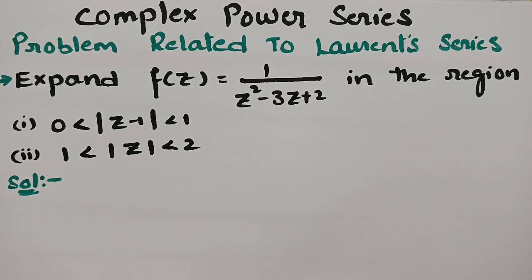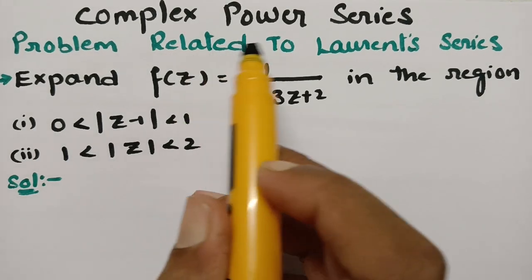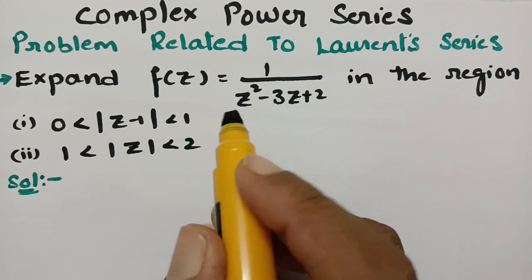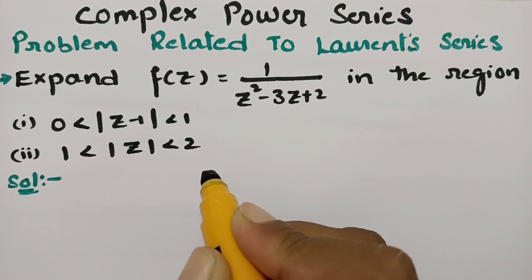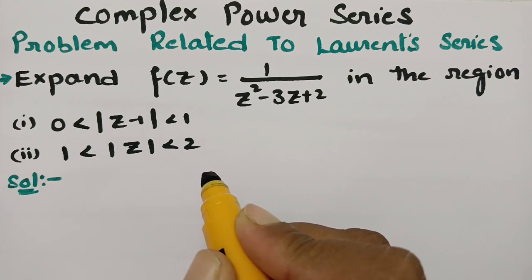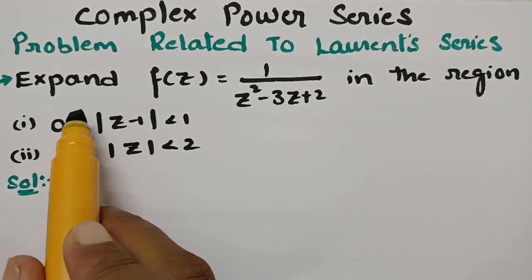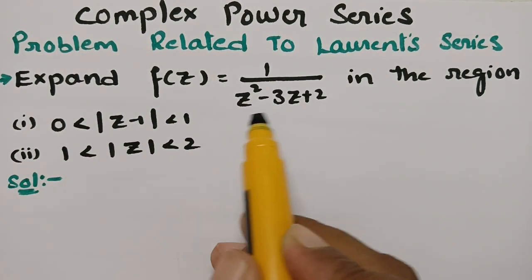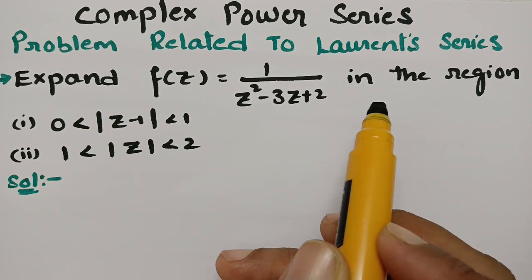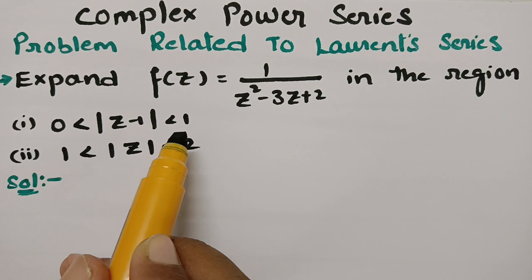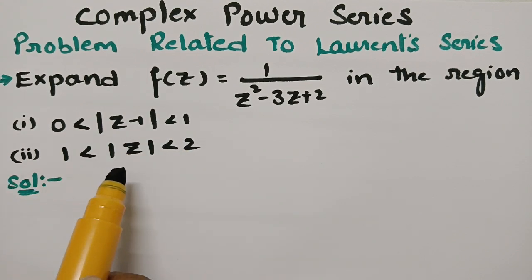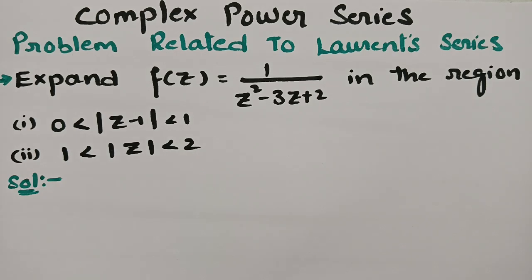Today's video is on the problem related to Laurent series, a topic from complex power series. This is a very important video because this problem is repeatedly asked in exams. We have to expand f(z) = 1/(z² - 3z + 2) in two regions: the first region is 0 < |z - 1| < 1, and the second region is 1 < |z| < 2.